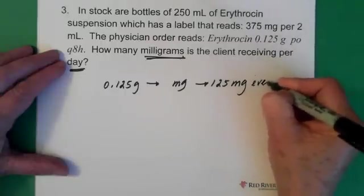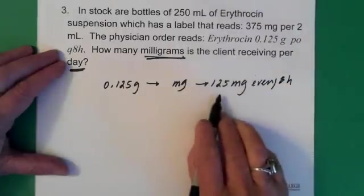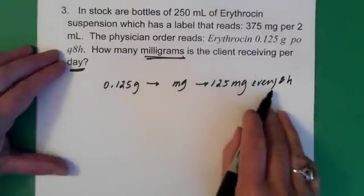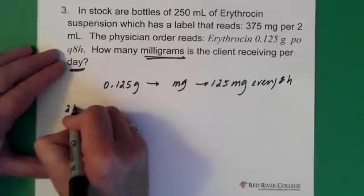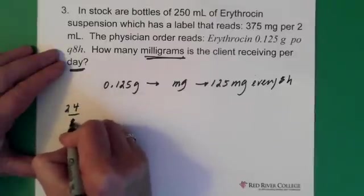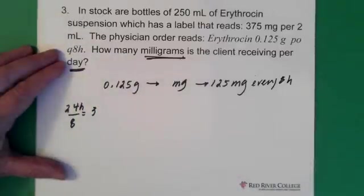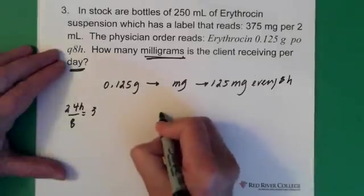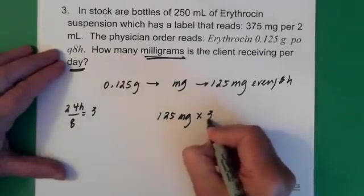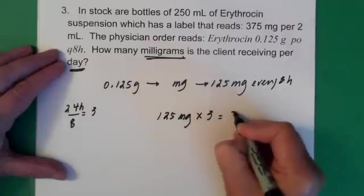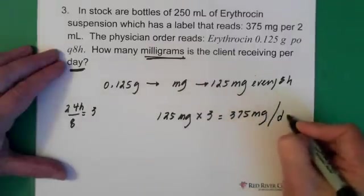So, every 8 hours. So, that's what we're giving every 8 hours. And, if we're giving medication every 8 hours, we know that that happens 3 times a day. So, we take 24, divide it by the 8, and we end up with 3. And, that's 24 hours. So, we take our 125 milligrams, multiply it by the 3 times a day, and we end up with 375 milligrams per day.